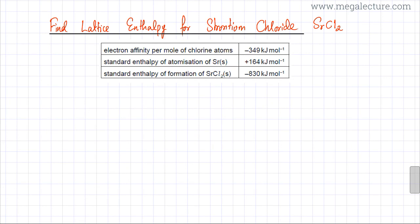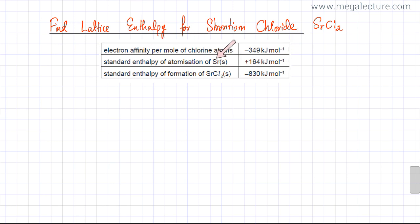Some of the information is already provided in the question. You're given the electron affinity per mole of chlorine atoms, which is minus 349 kJ/mol. You're also given the standard enthalpy of atomization of strontium, which is 164 kJ/mol, and the standard enthalpy of formation of SrCl₂, which is minus 830 kJ/mol.